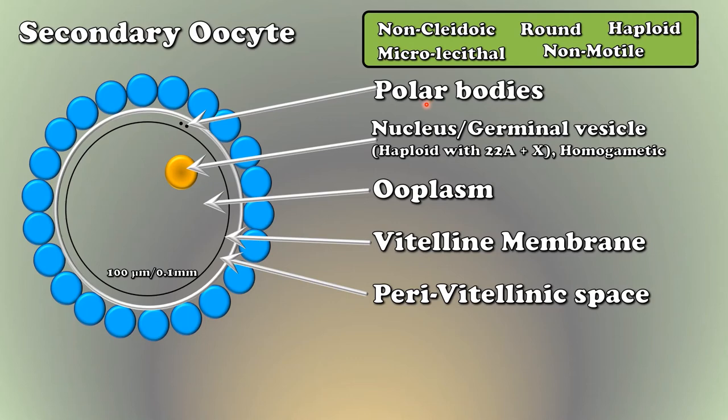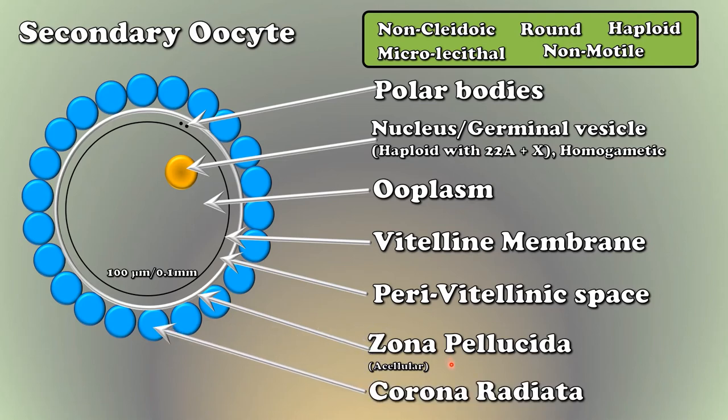The vitelline membrane is surrounded by acellular zona pellucida, which is made up of glycoprotein. Zona pellucida is surrounded by corona radiata cells, which are embedded into hyaluronic acid. It is made up of mucopolysaccharide.